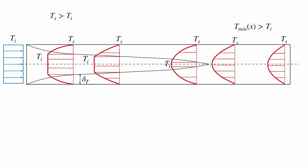Now let's consider the temperature profiles when we have that flow situation. We'll have a thermal boundary layer which will meet and we'll have a different thermal development length. When the flow first enters, we have the temperature at the inlet Ti, and the surface of this pipe is at some temperature which is greater than Ti. That means that at any given section, we will have the temperature decreasing out to a region where the temperature is still at that inlet value and it hasn't felt the effect of the walls yet.